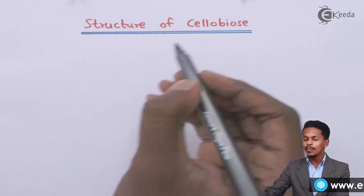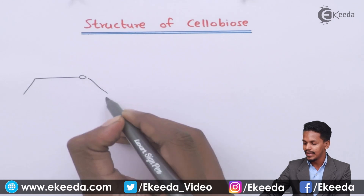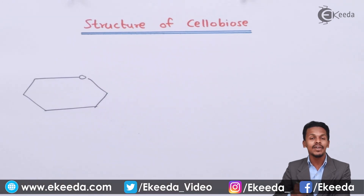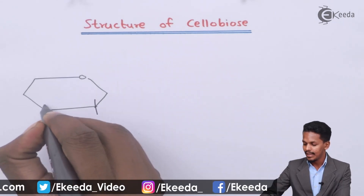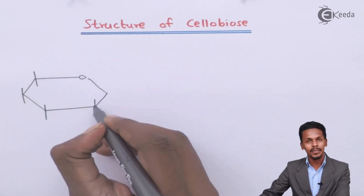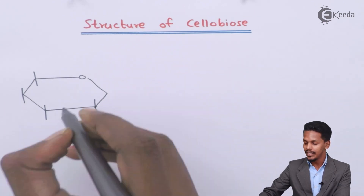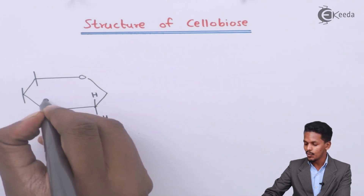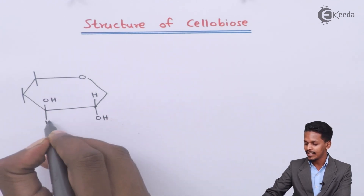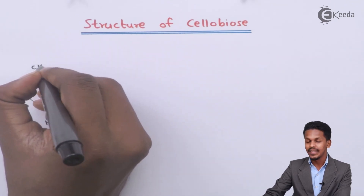Cellobiose is nothing but a combination of beta-fructofuranose. We should understand the structure of alpha D-glucopyranose first. This is the anomeric carbon atom — I am leaving it as it is. Talking about the other carbon atoms: this is carbon number 2. The OH is attached to the lower side while H is attached on the upper side, and here the OH is attached on the upper side and here there is H. This is how I am drawing the structure of glucopyranose.